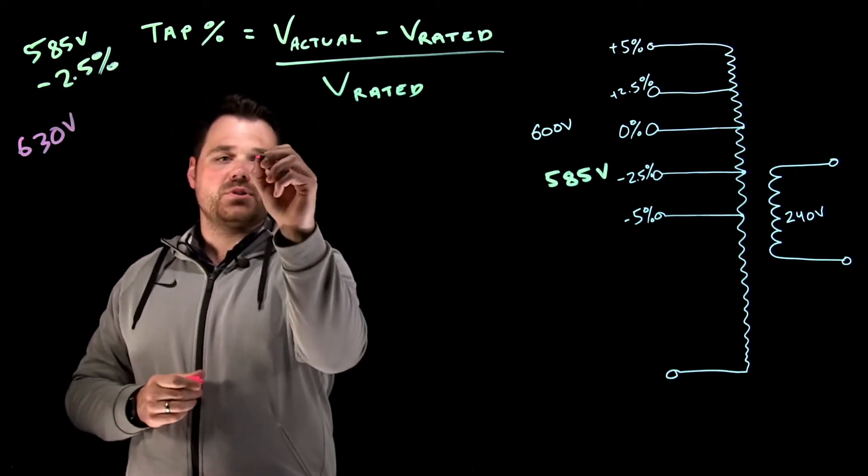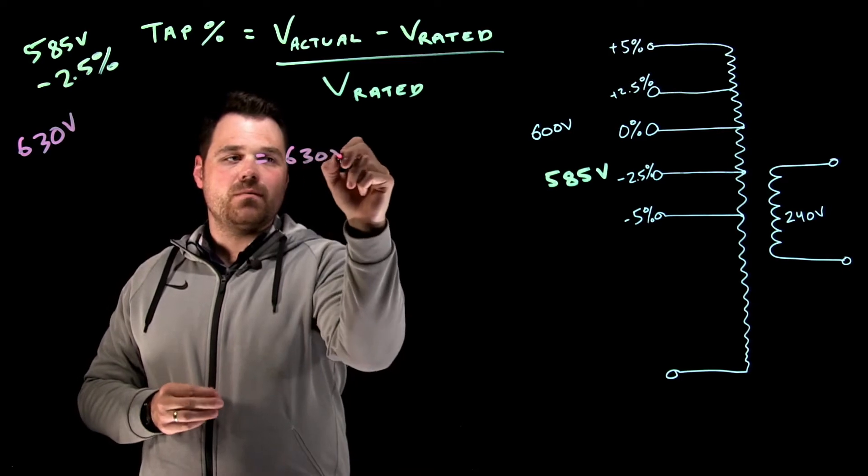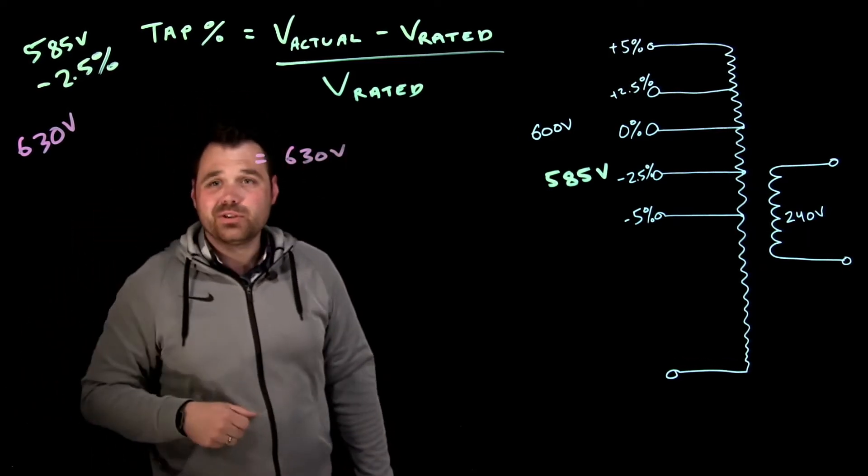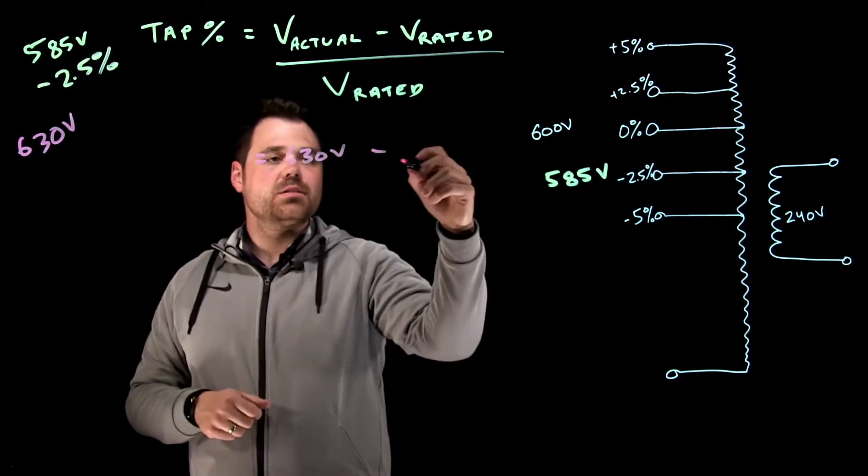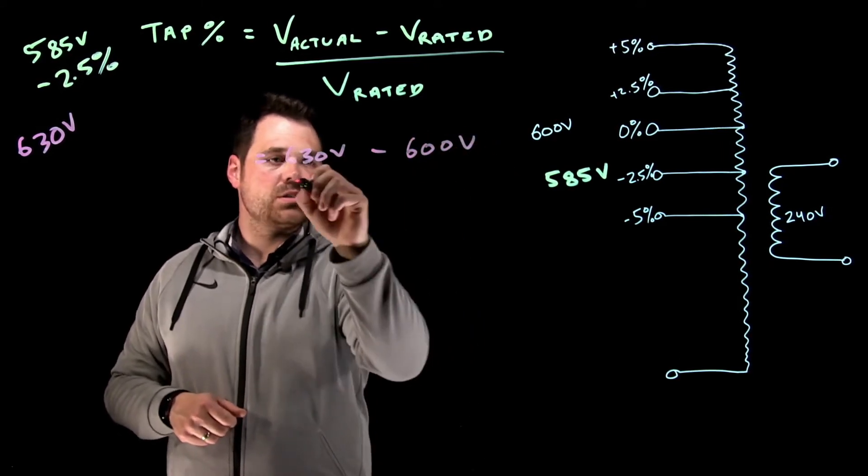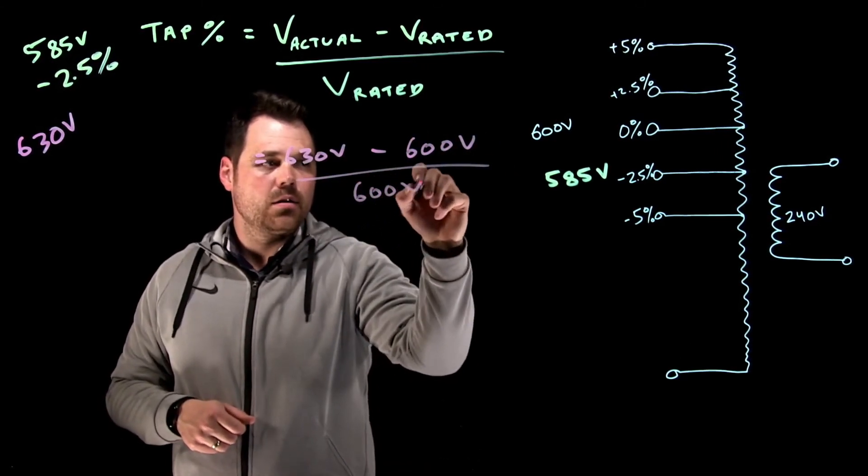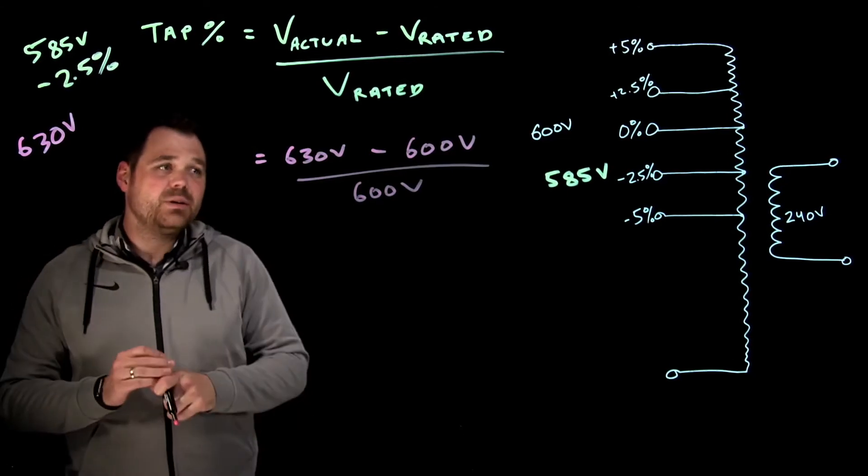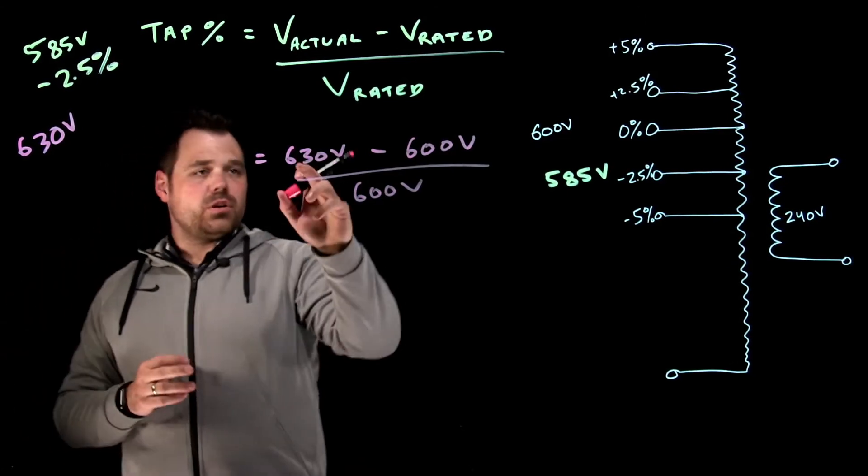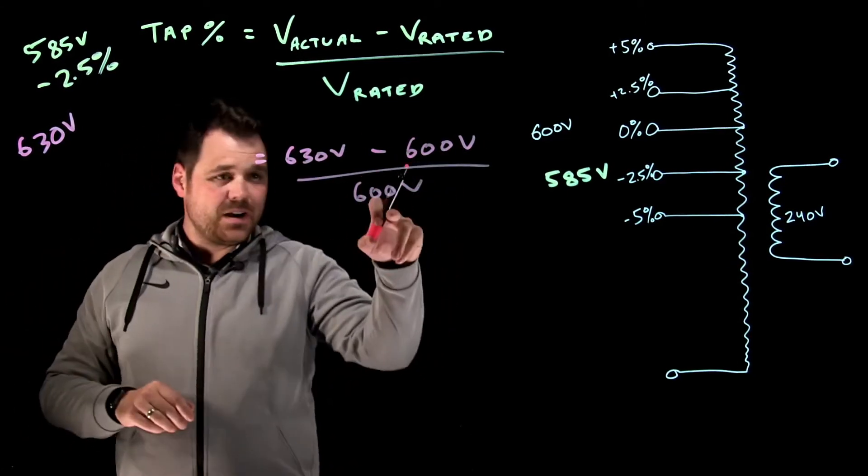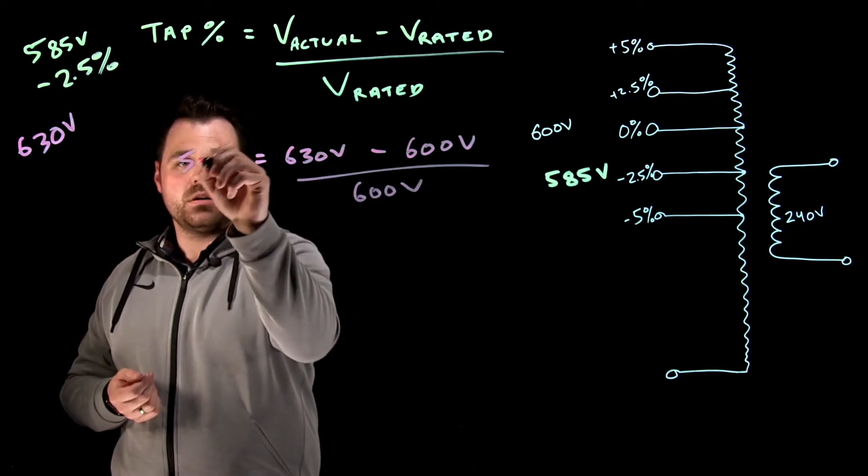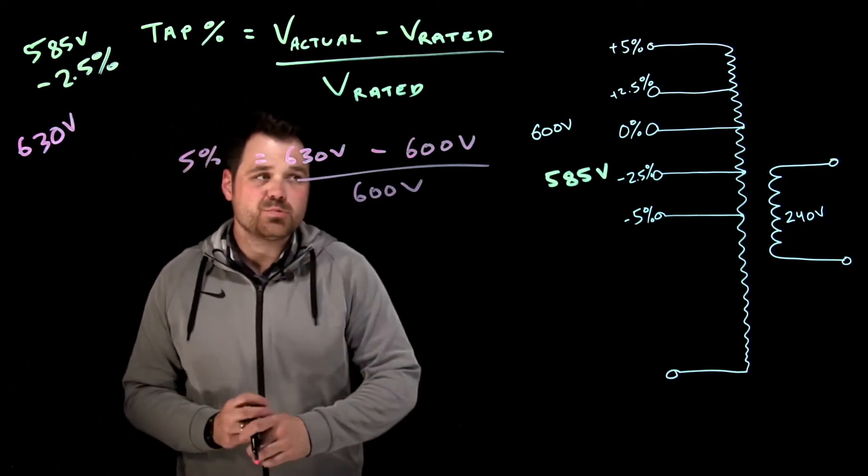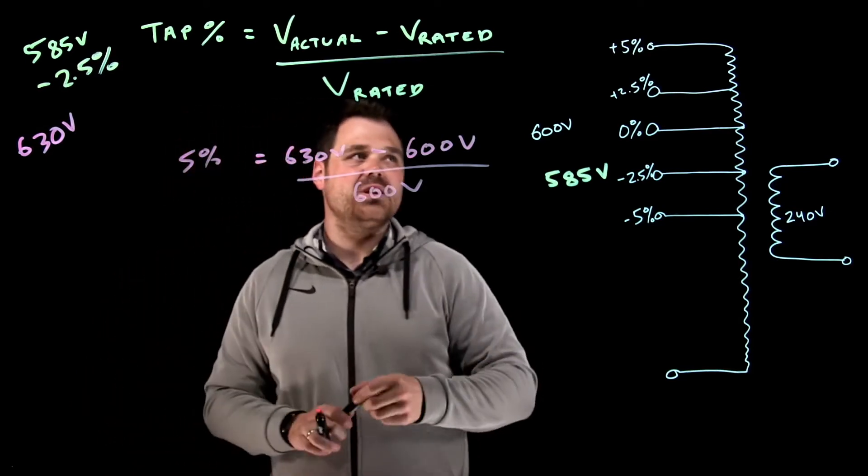Okay, so I'm going to go tap percentage equals 630 volts, my actual voltage minus my rated 600 volts divided by rated. That's going to give me an answer. 630 minus 600, that's 30 divided by 600. That is going to equal positive 5%. So I can use my positive 5% tap.